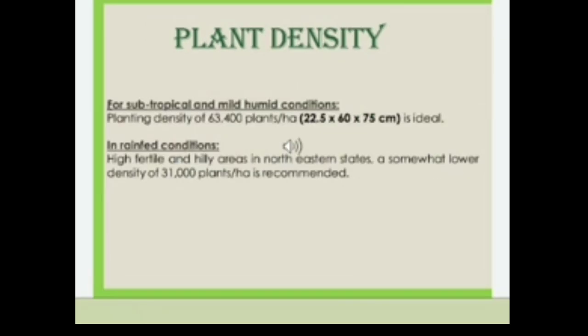Planting density: For subtropical and mild humid conditions, a planting density of 63,400 plants per hectare is ideal. In rain-fed conditions in high fertile hilly areas in North East states, a somewhat lower density of 21,000 plants per hectare is recommended.